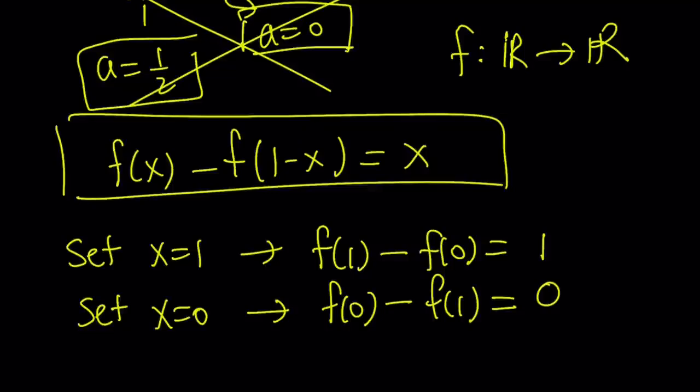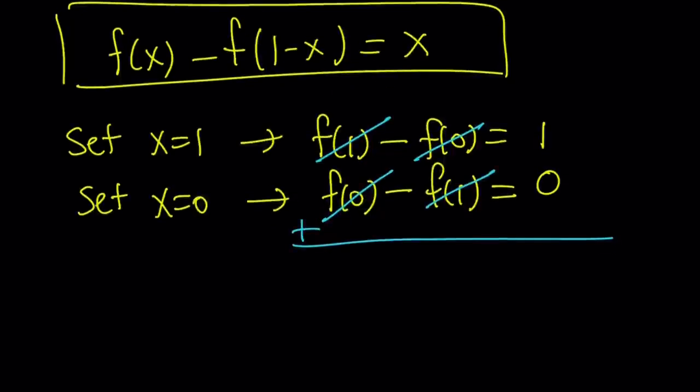This might look like a nice system, but it's not nice at all. Let's go ahead and add them up, and my goal is to solve this by elimination. But f of 1 minus f of 1 is 0, f of 0 minus f of 0, so everything cancels out. That's the problem, because now we end up with 0 on the left-hand side, but 1 on the right-hand side. This is impossible. 0 does not equal 1.